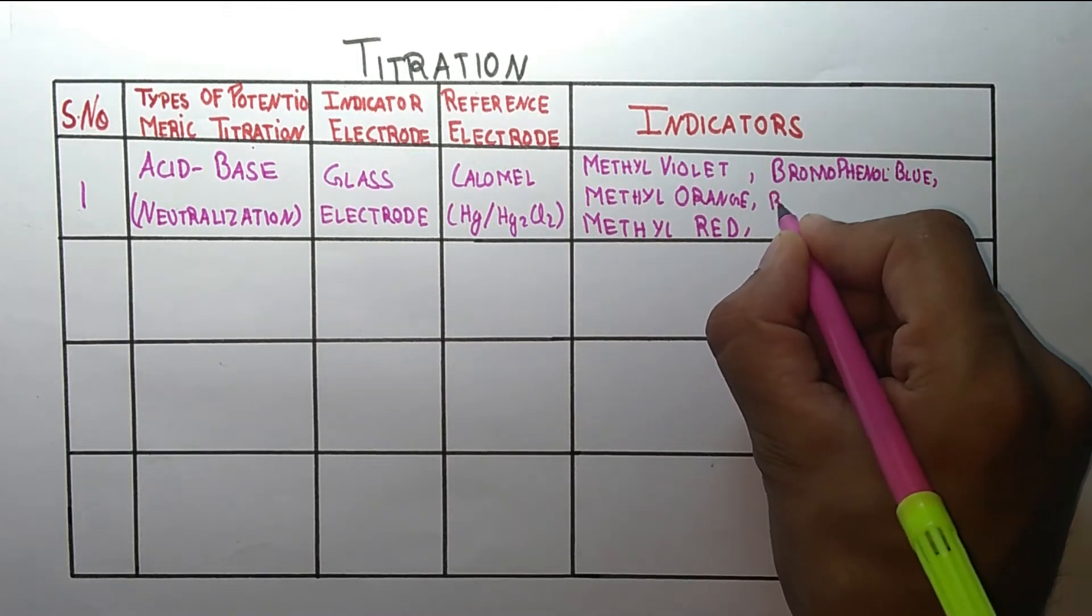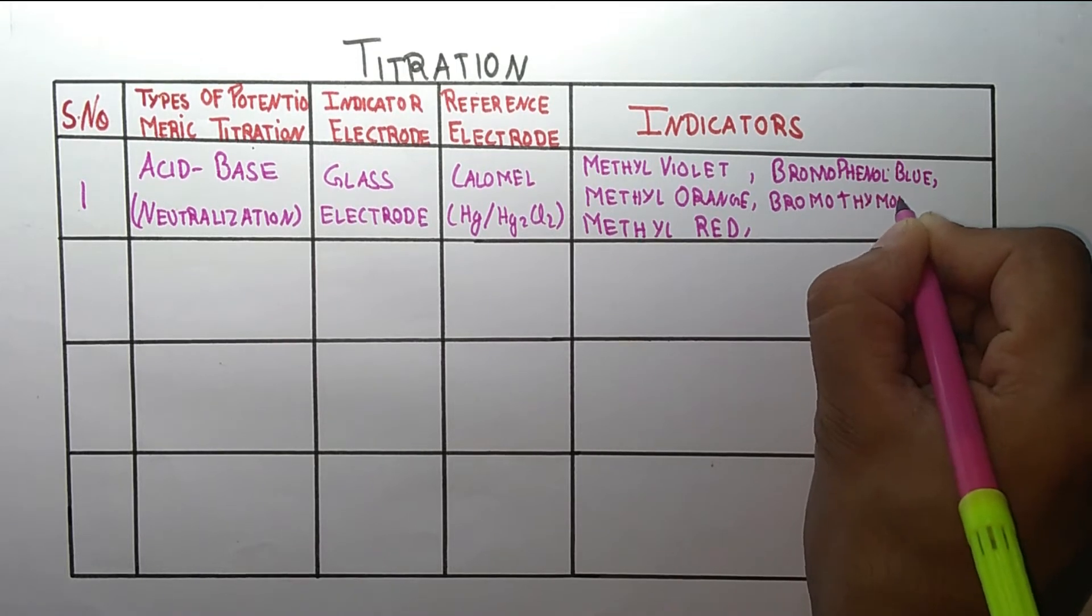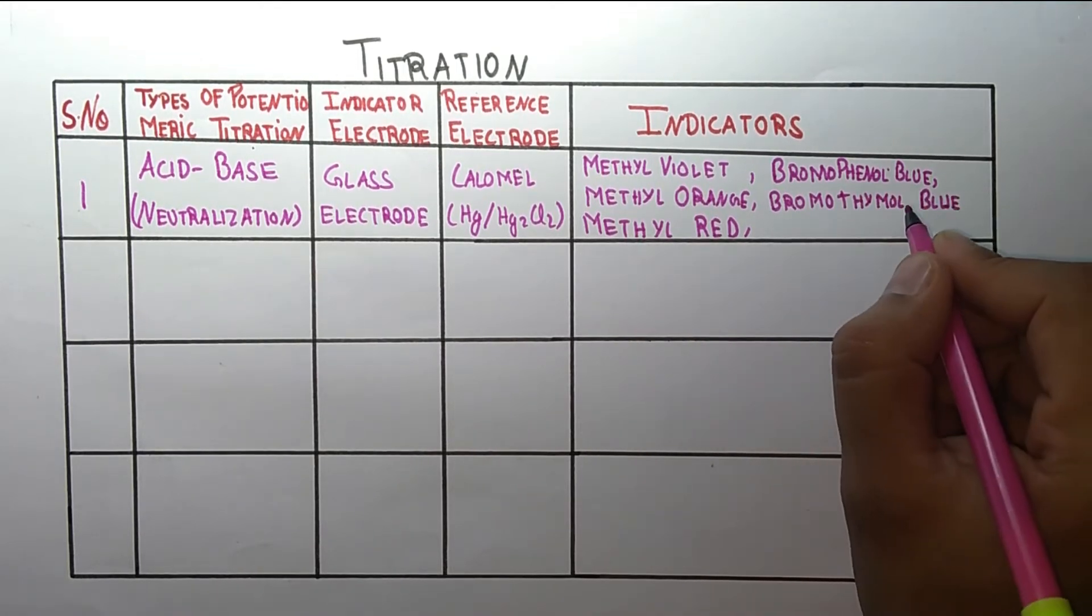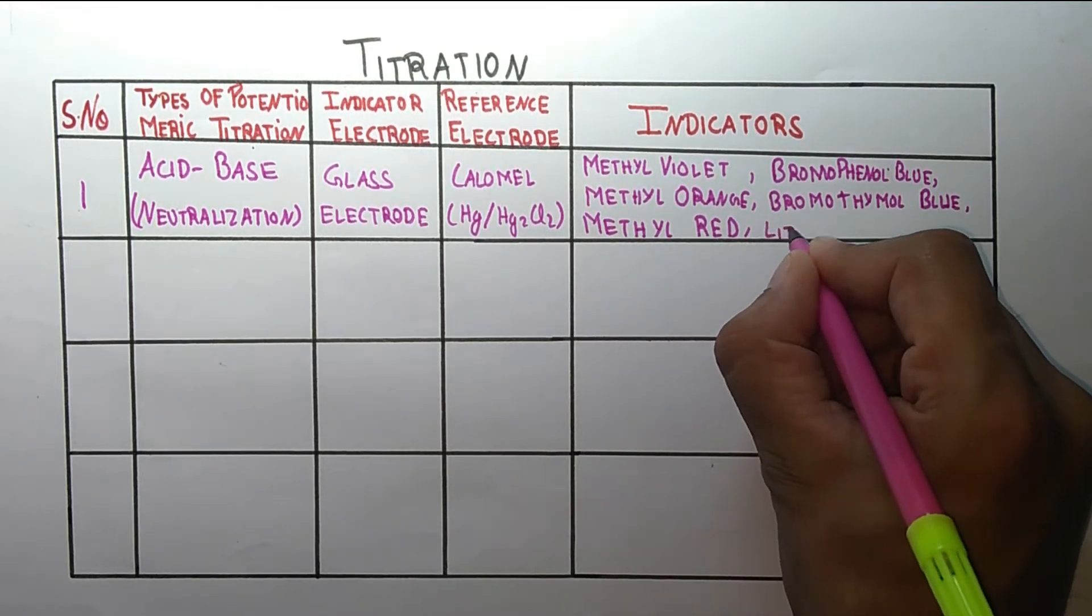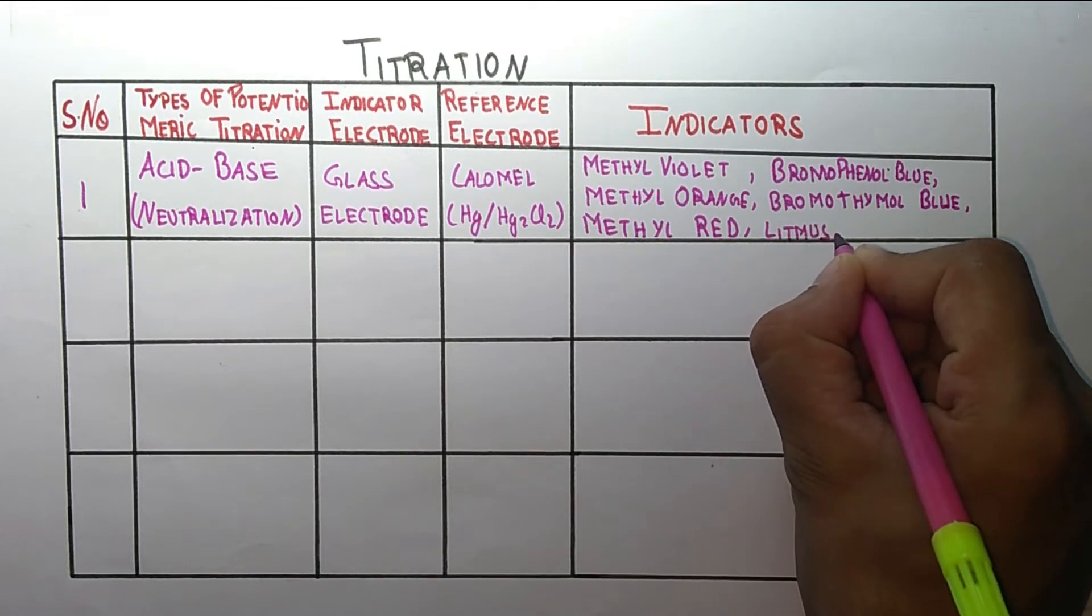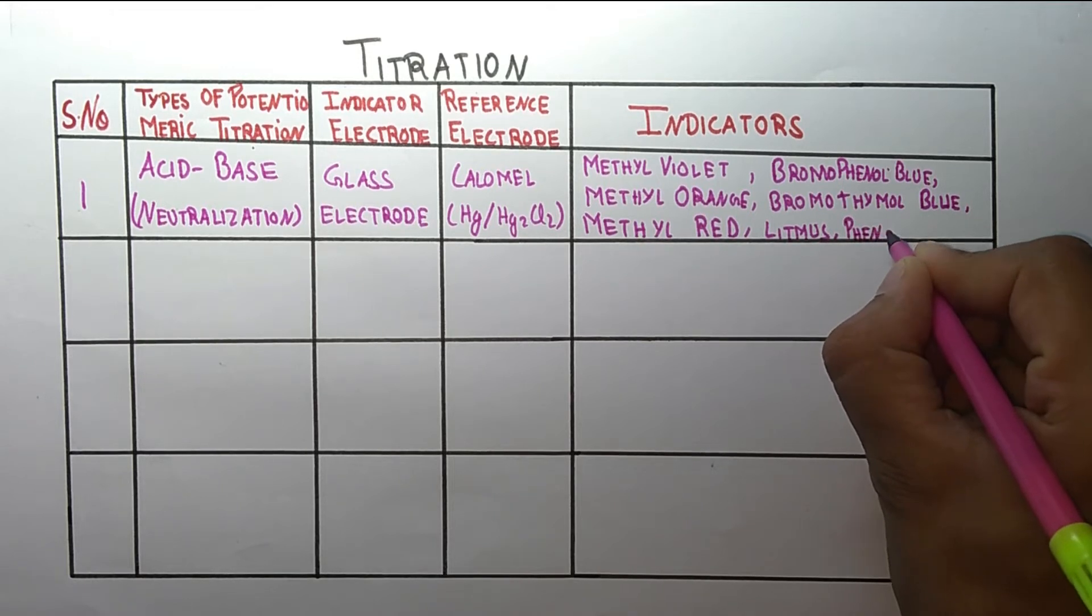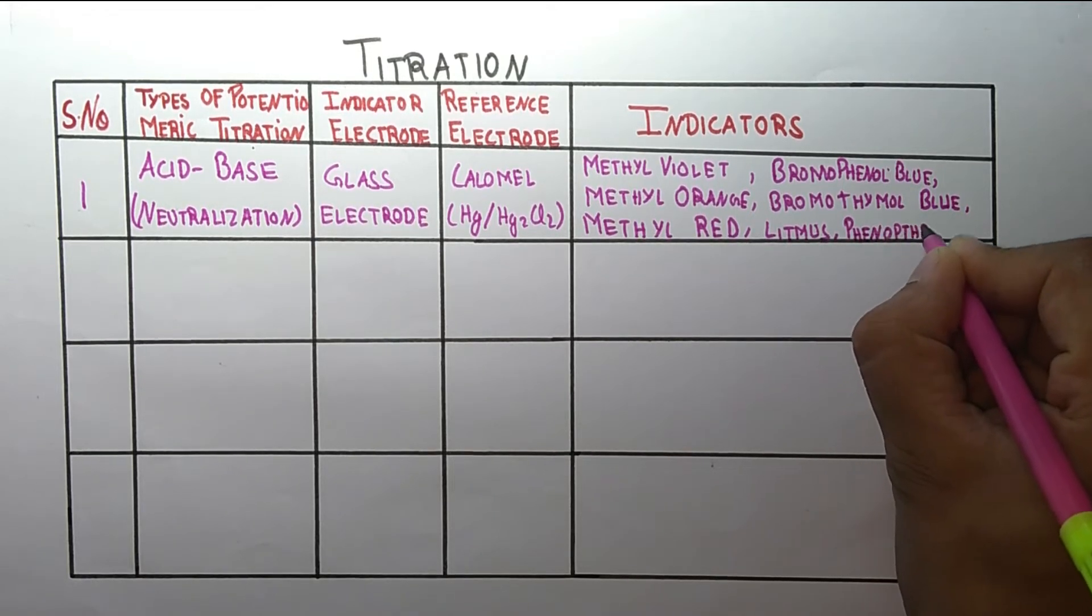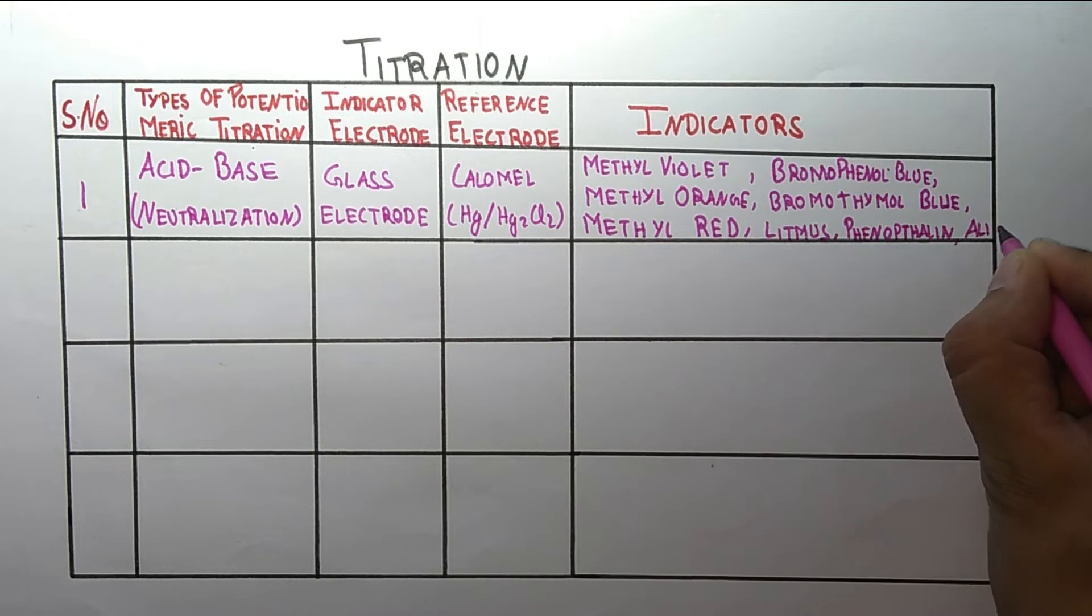And bromothymol blue, and there are three more indicators present. Next one is litmus, phenolphthalein, and the last one is alizarin yellow.